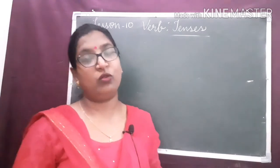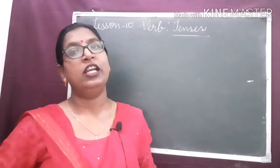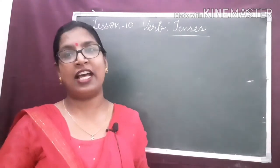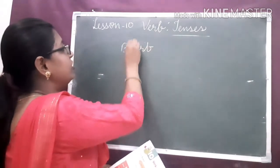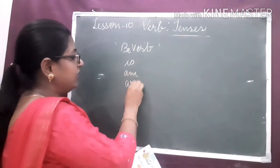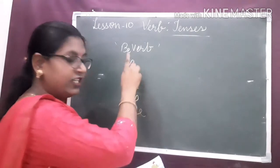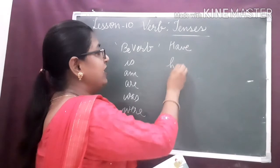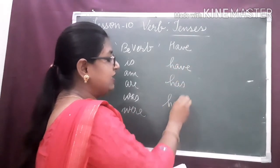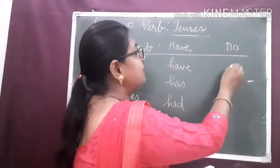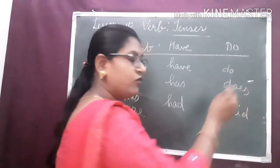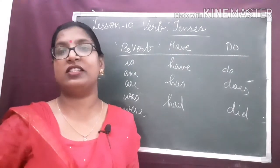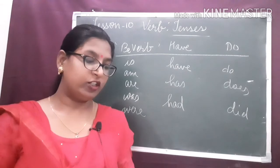Dear children, in the previous chapter we have already studied the different forms of auxiliary verbs or helping verbs. These are the be verbs, have verbs, and do verbs. Be verbs are: is, am, are, was, or were. Have verbs are: have, has, or had. And the forms of do verbs are: do, does, or did. We have already studied this in the previous chapter. You can go through page number 70 and 71 where a clear table is given about these different forms of verbs and how to use them.